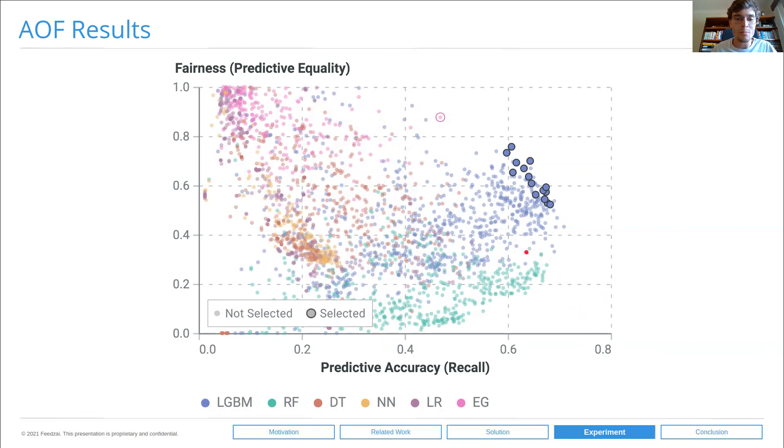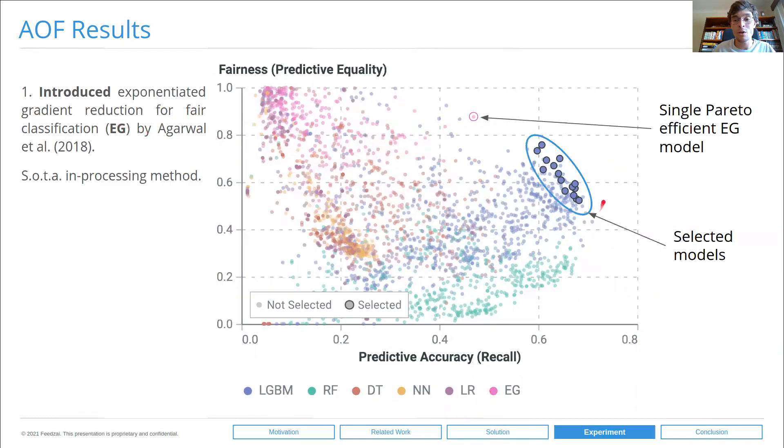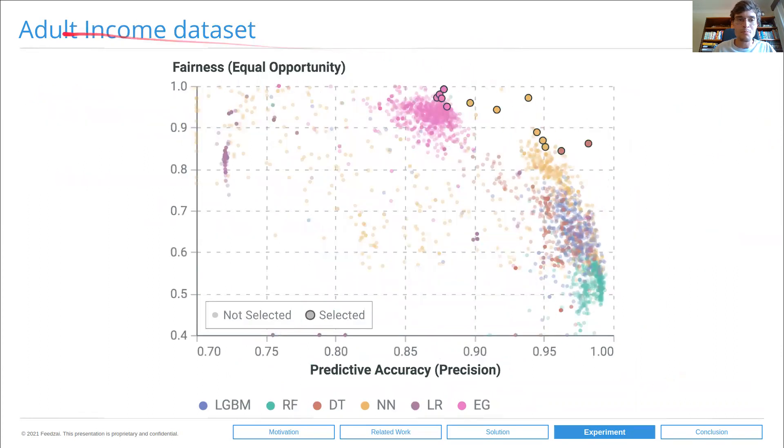As a final experiment, we included another model type that wasn't included initially, which is Exponentiated Gradient, which is an in-processing bias reduction method. By including this EG, we were trying to figure out if our models found by hyperparameter optimization were actually better trade-offs than a state-of-the-art in-processing method. What we found is that actually, in this case study, they most definitely are. We ran FB Auto over this data, Fairband Auto, and the selected models are actually all LightGBMs trained in the fairness-blind manner but achieving excellent fairness utility trade-offs. A single Pareto-efficient EG model is found here. And this trend is visible as well on the adult income dataset.